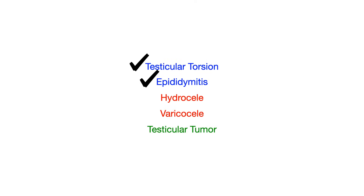So we're already done with the highest yield part of this conversation. Differentiating torsion from epididymitis is very important to do. Really all you need to do in that question is look for the Prehn's sign and the cremaster. If they give that to you, you're going to get the answer right.